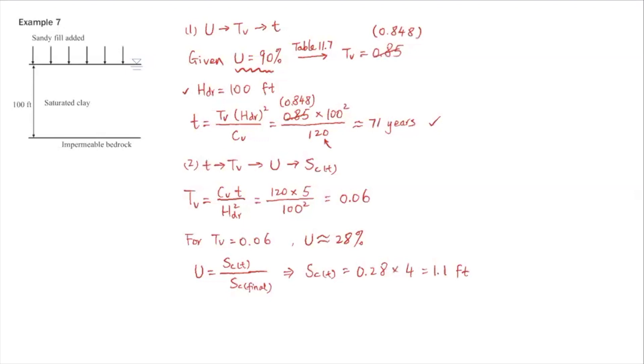Part two is the reverse. You're given time t, so we're given t of 5 years, and we want to find out the settlement at that time.